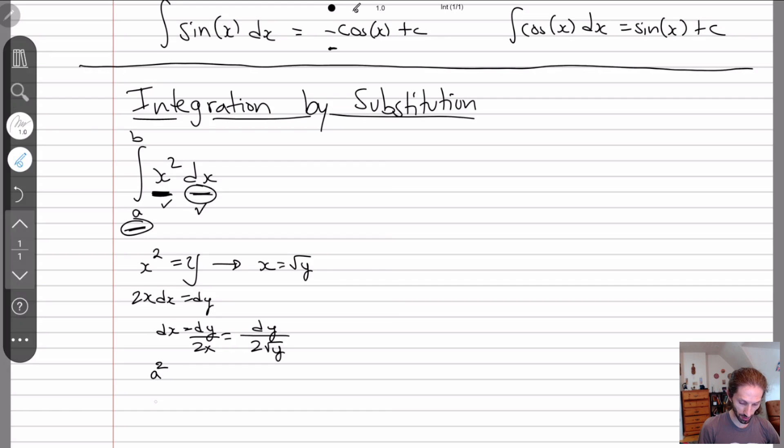A squared is one of the bounds. So a gets sent to a squared, and b gets sent to b squared. So basically, what this does is when we substitute in y, our bounds change by what the new bounds are in the y scenario. Our x squared becomes a y. And then our dx, we need to substitute in whatever our dx was. So dy over 2 square root of y.